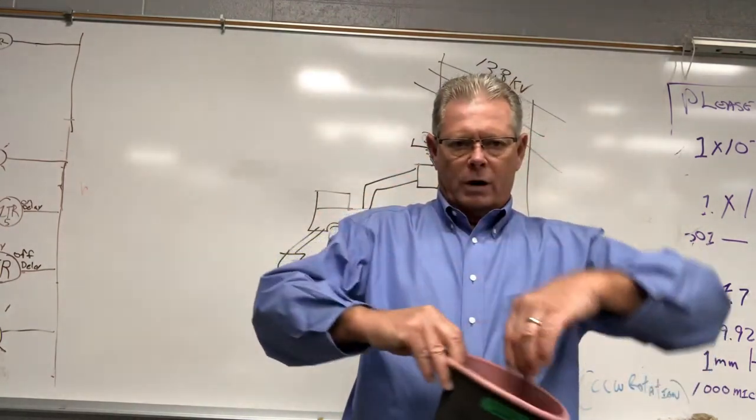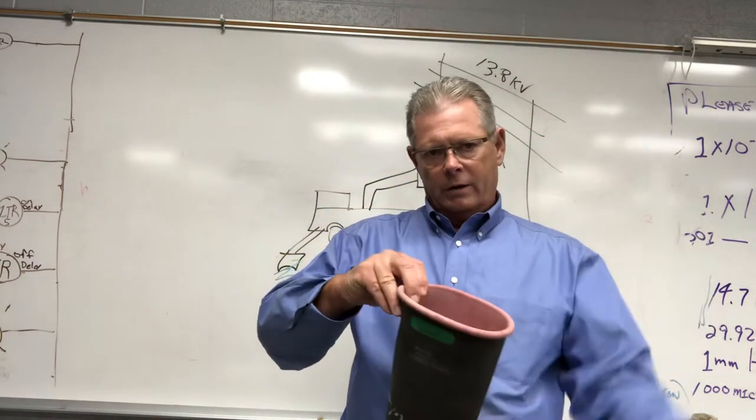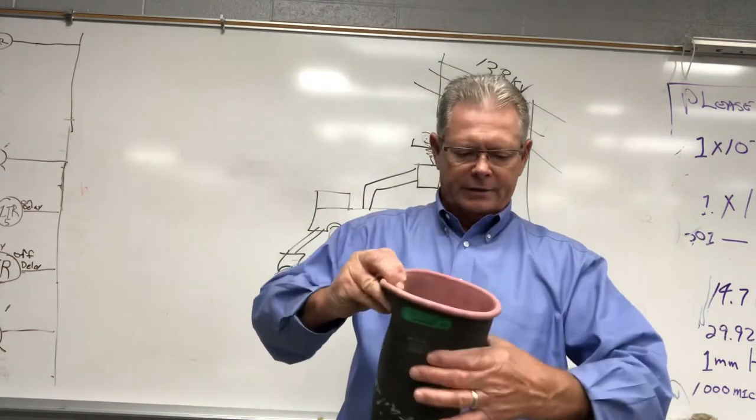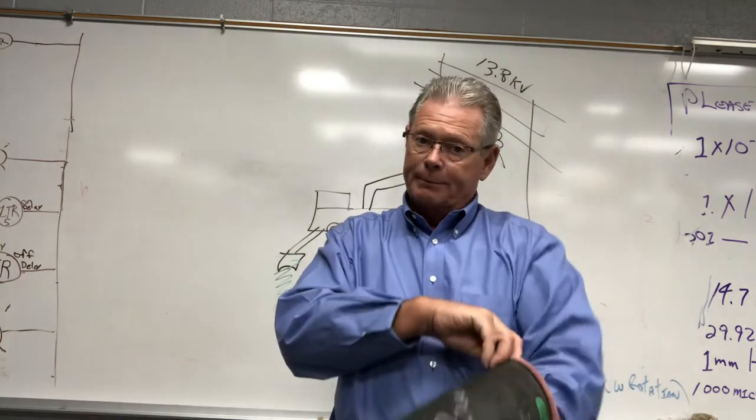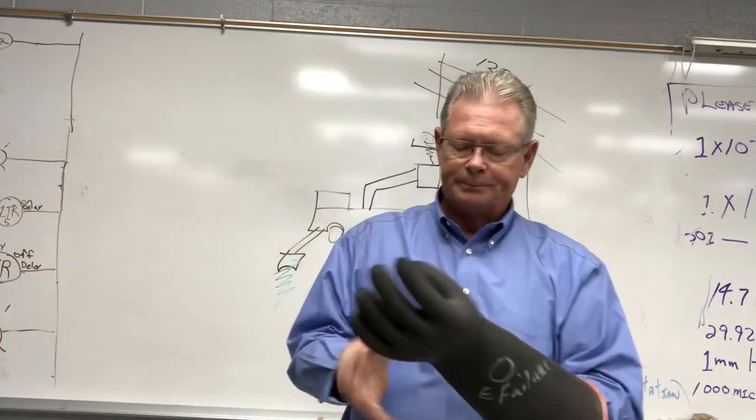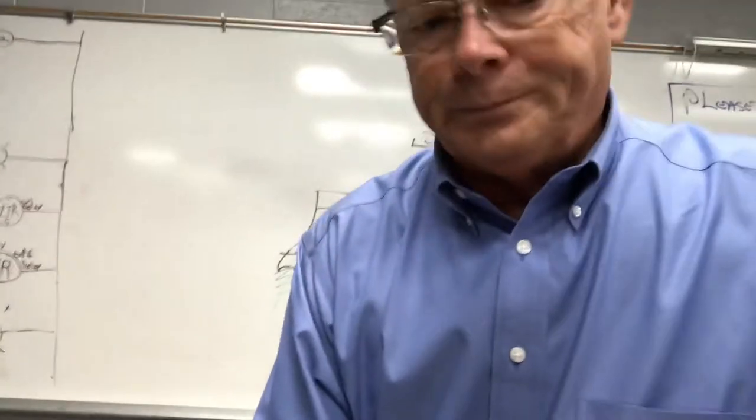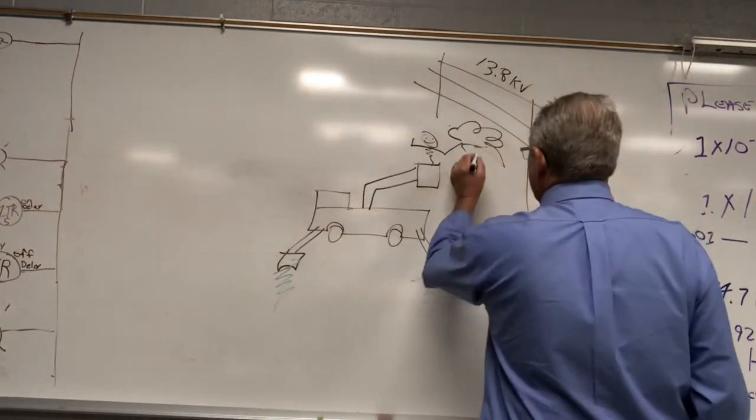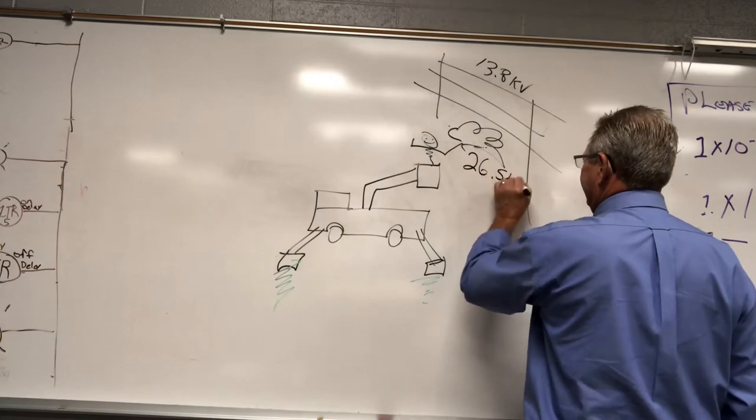They put them in a vat of water with an electrode. They fill them with water, put them in a vat of water, take them down so far, and they see if they can pass a current through the rubber. So these gloves are 26.5 kV.